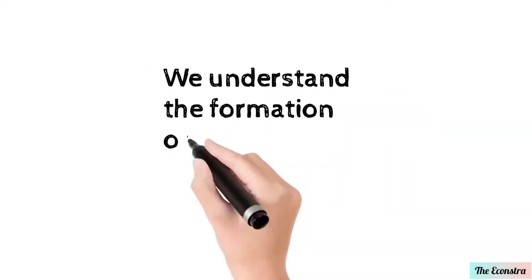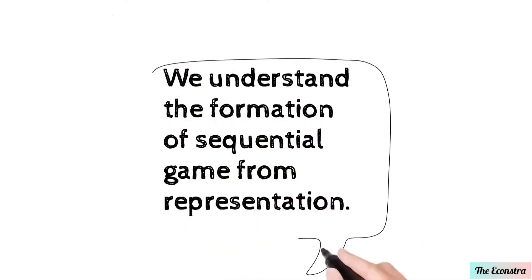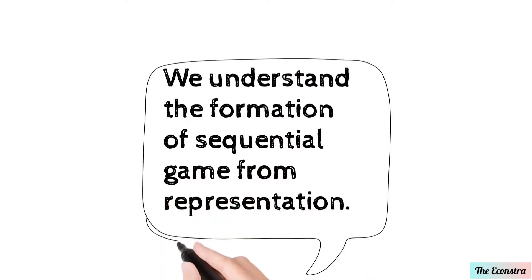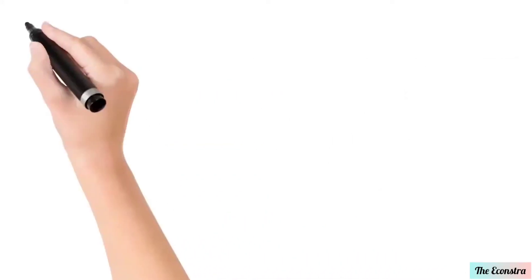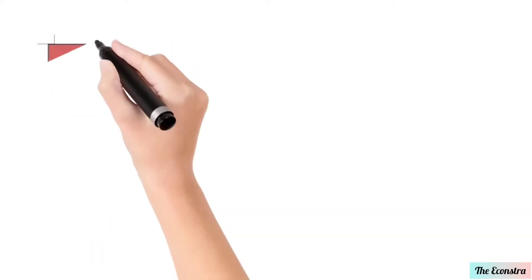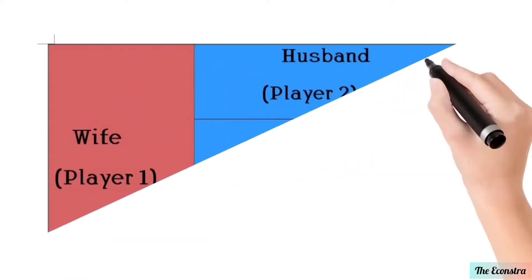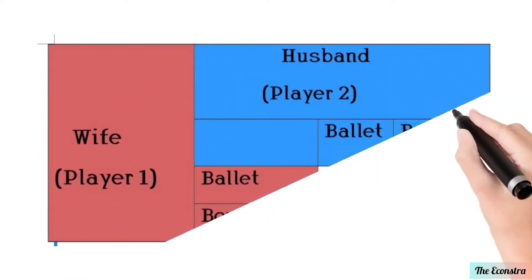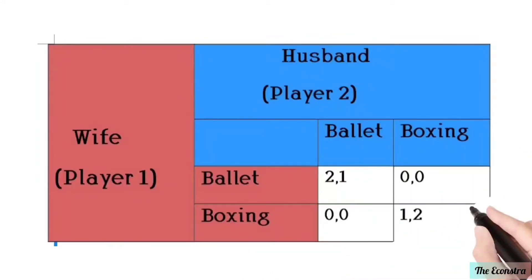We can understand the formation of the sequential game from this representation. Here, Player 1 is the wife and Player 2 is the husband. The option 'belly' refers to a belly dance, and 'boxing' refers to a boxing match.